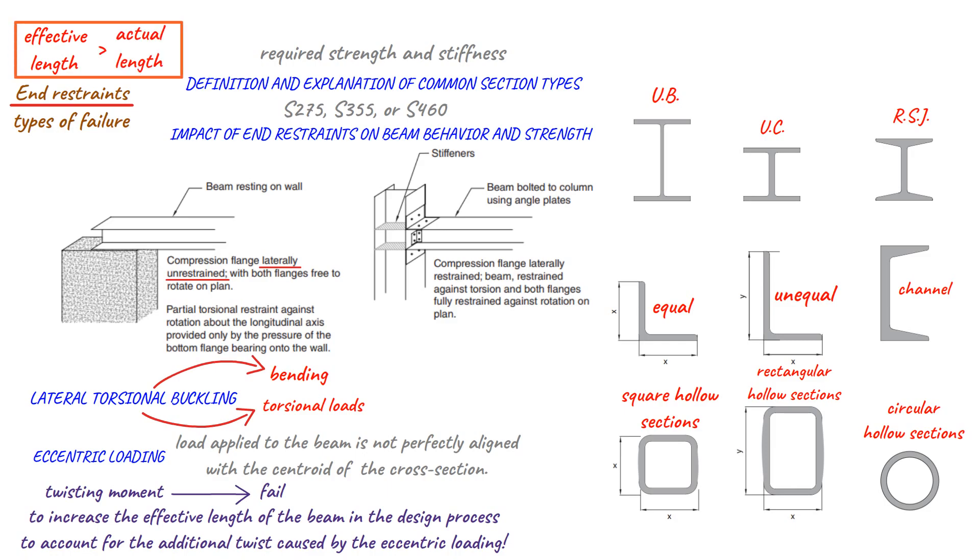However, if there are restraints at the end or the beam is stiffened along its length, the effective length can be reduced and may be considered to be only 0.7 of its actual length under certain conditions. This means that the beam required to carry the load can be smaller, saving material and cost.